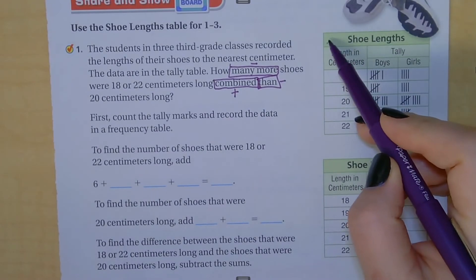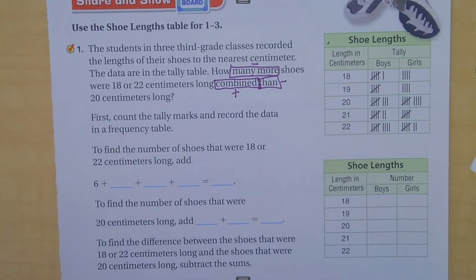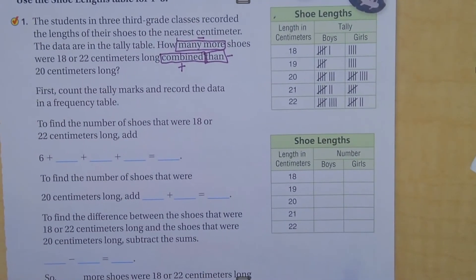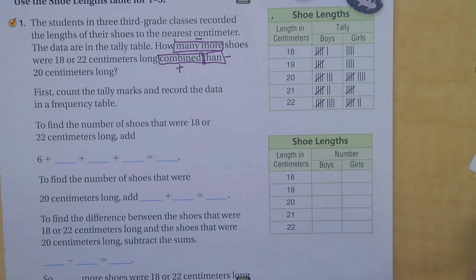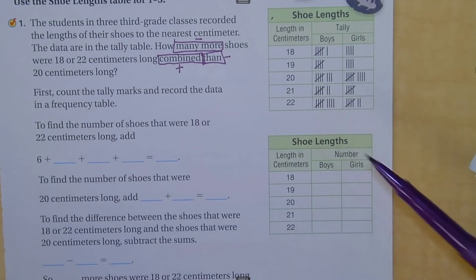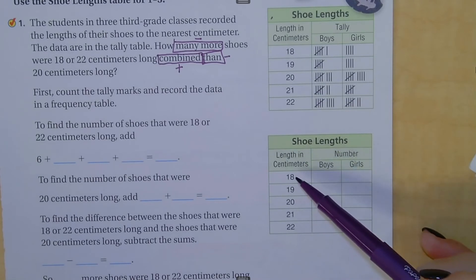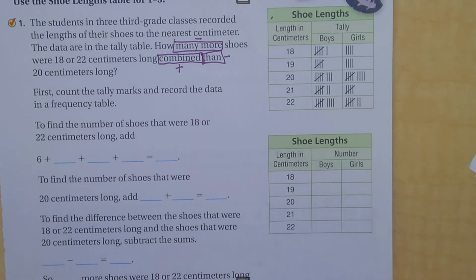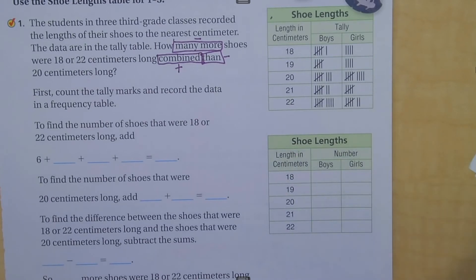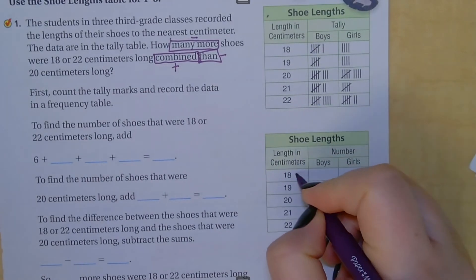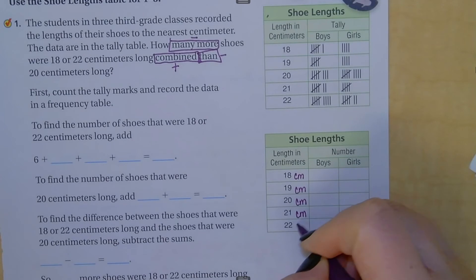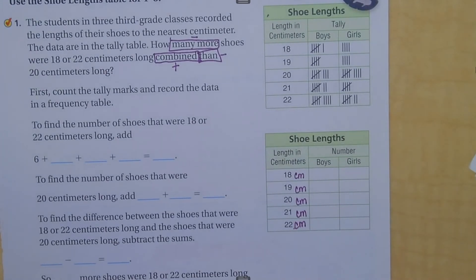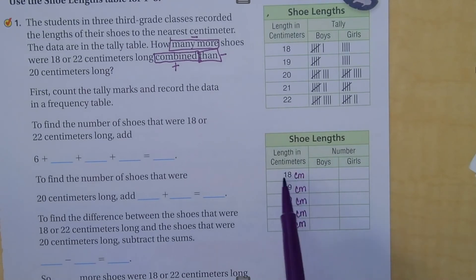Remember, this is a tally table and this is a frequency table, so we need to do that first. They've already copied all the information; now we just have to count. Don't get confused — these numbers are centimeters. If you have to label them so you remember, then label them. We have the number of boys and the number of girls for each length.